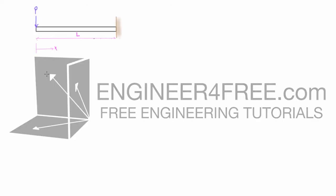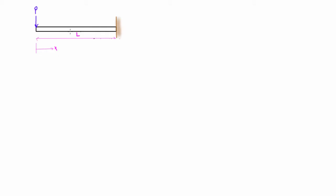Hey guys, welcome back. In this video, I'm going to go over an example on finding the deflection and slope of the end of a cantilever beam subject to a single point load. Once we apply that point load, it's going to bend down. We want to figure out exactly, in terms of P, how far down it deflects — we call that Y — and the end slope, which we call theta. The maximum deflection will be at the end, like a diving board: if you stand there, the end bends down further than the parts closer to the wall.